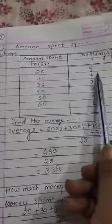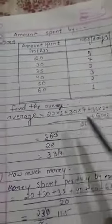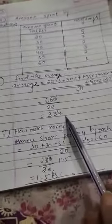So what is the average? 20 rupees 5 days. So 20 multiply by 5, 30 multiply by 7 upon total number of days, 20 divided by 20. That is 33 rupees.